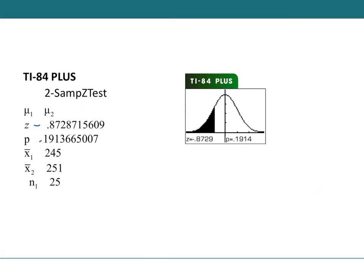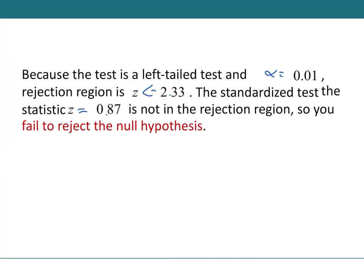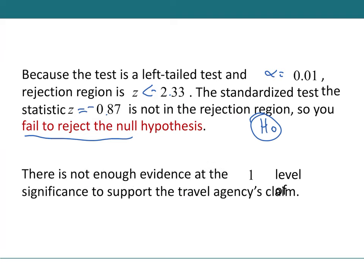z = -0.87, p-value ≈ 0.1914. The rejection region was z < -2.33, but -0.87 is not close. About a 19% chance of this result due to random chance—not rare. Fail to reject H₀ at the 1% significance level; we cannot support the claim that Texas costs are less than Virginia's.